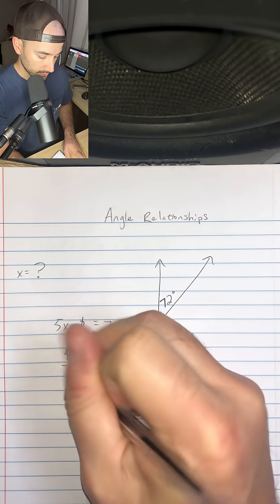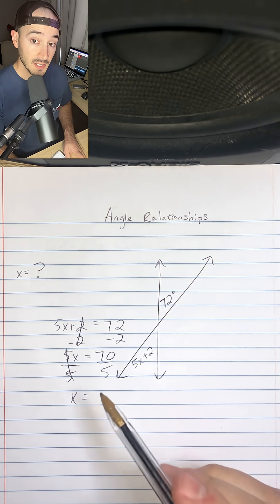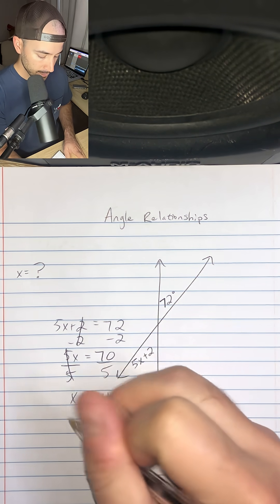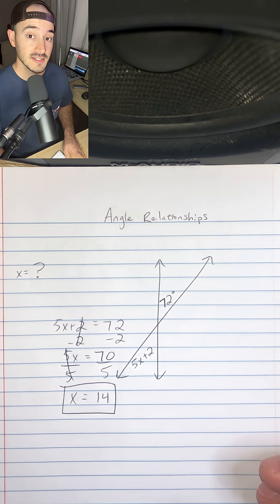To get x is equal to 70 divided by 5, which is 14. So x is equal to 14, and that is our final answer.